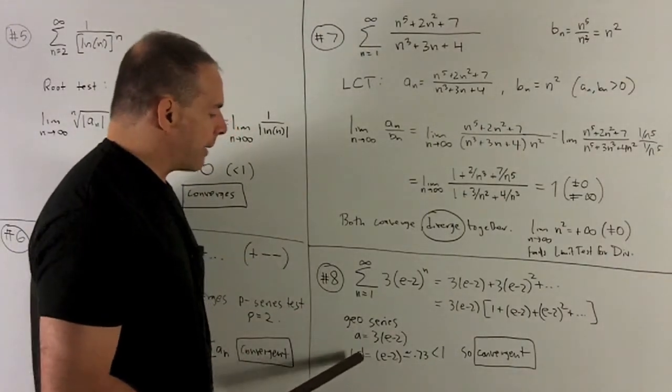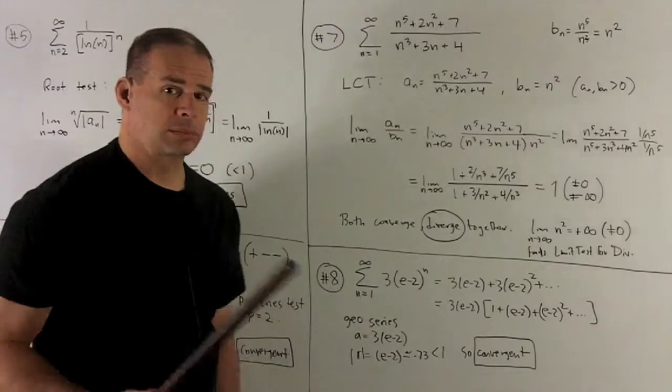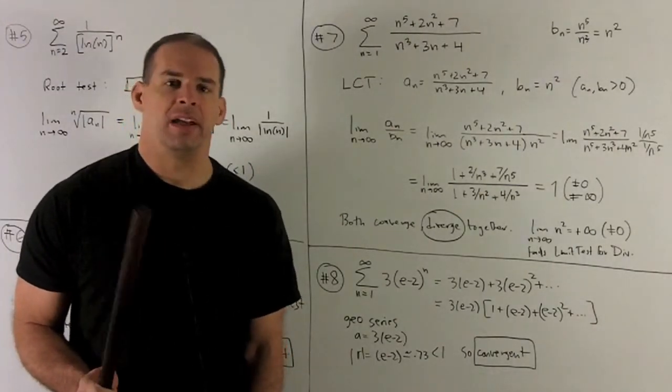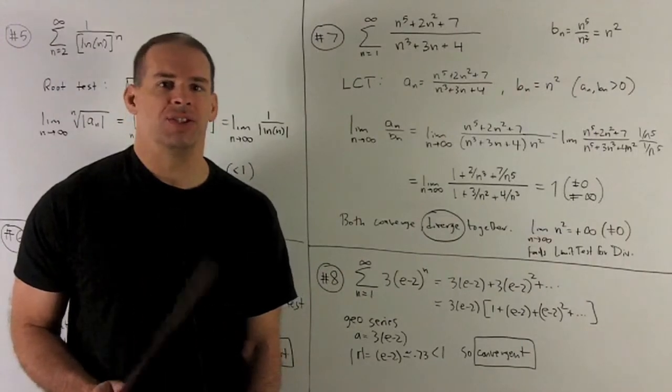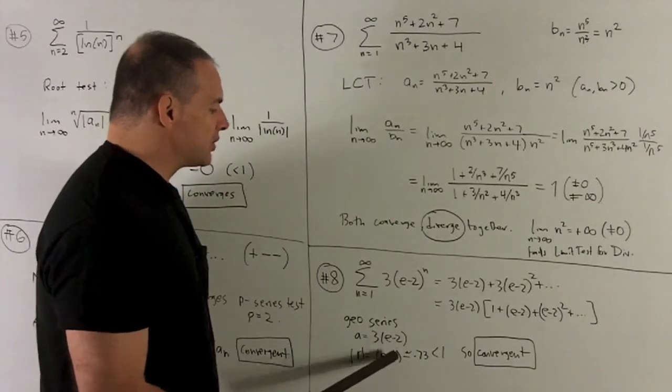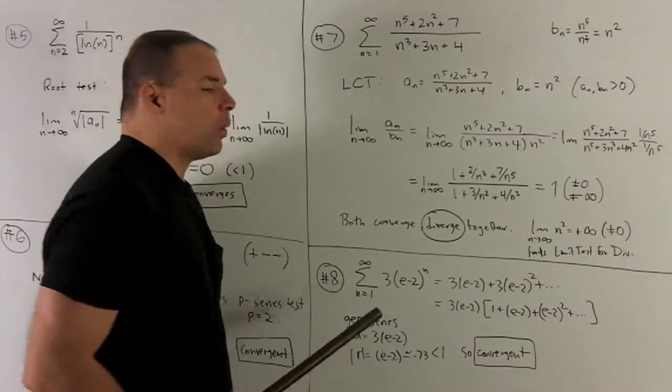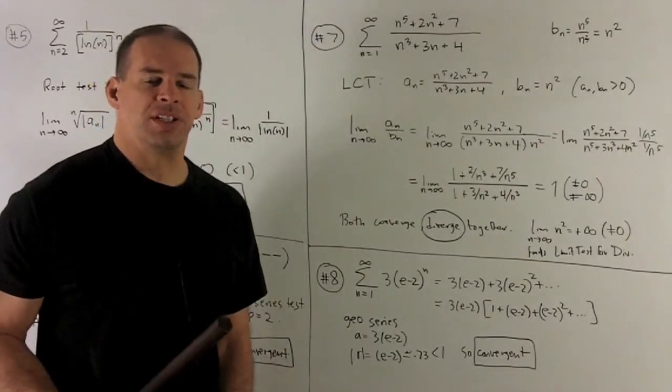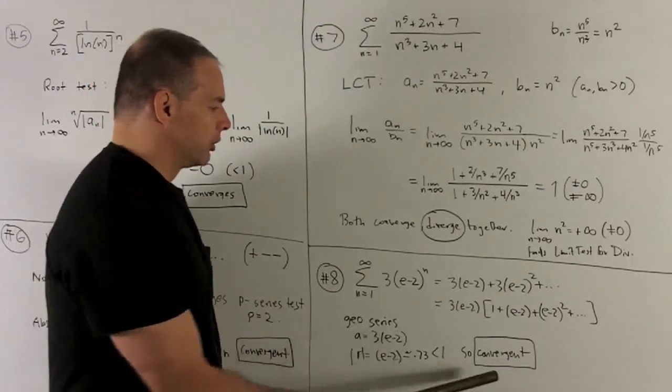So now I can go over to my geometric series test and see what's going on. We have our absolute value of r equal to absolute value of e minus 2. So the idea here is, although we have e in the problem, you shouldn't be thrown off by it. e is just roughly 2.73. So we'll use it like that. So e minus 2 is going to be roughly 0.73, strictly less than 1. So the geometric series test says we have a convergent series. So, convergent.